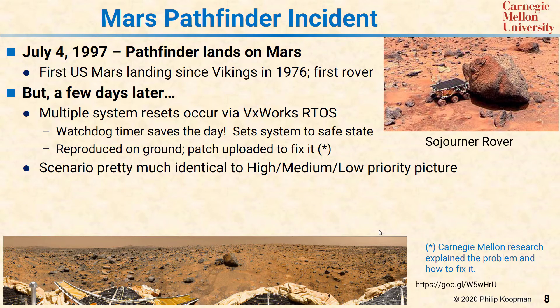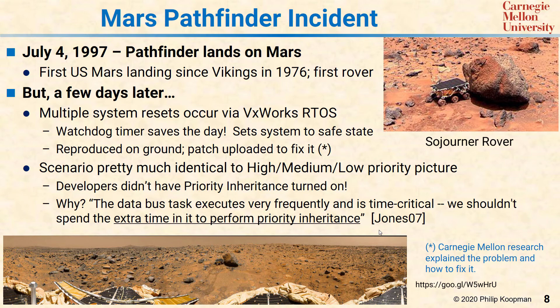How did that happen? The developers did not turn on priority inheritance. The operating system had it, but they turned it off because they were worried about processor performance and execution speed. The explanation was that the data bus task executes very frequently and is time critical, so they shouldn't spend the extra time in it to perform priority inheritance. But skipping that step almost cost them the mission.